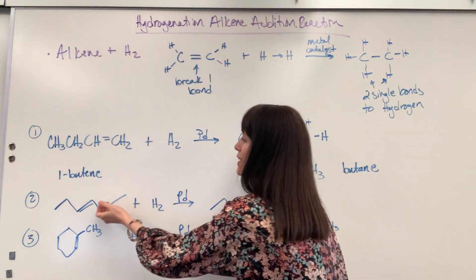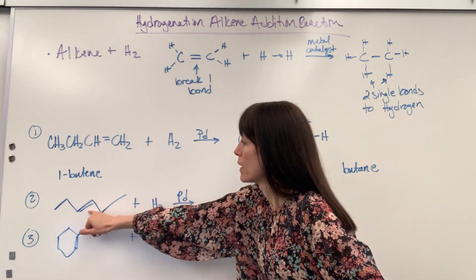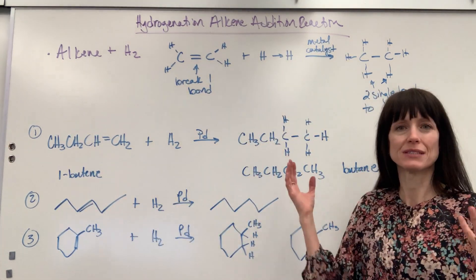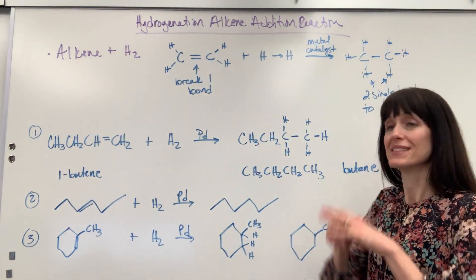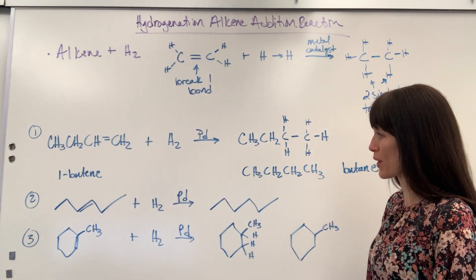So then I just draw this as hexane. It went from that unsaturated to saturated. That double bond is broken. We have the two hydrogens. We've got the alkane, which is saturated. Maximum number of hydrogens around those carbons.